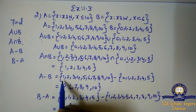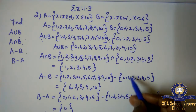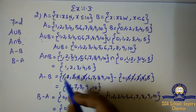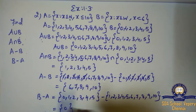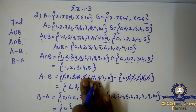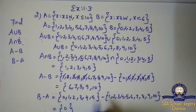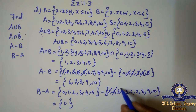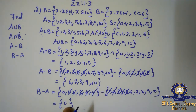Next is A minus B. A values 1 to 10, minus B values 0 to 5. We cancel the common elements 1, 2, 3, 4, 5. After cancelling, we write only the pending elements from A: 6, 7, 8, 9, 10. Next is B minus A. B values 0 to 5, minus A values 1 to 10. We cancel 1 to 5. After cancelling, we leave the A set and write only the pending element from B, which is 0.